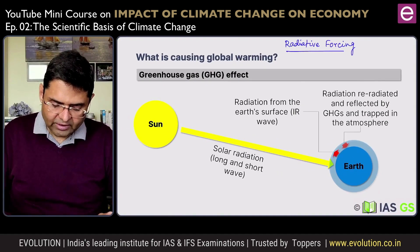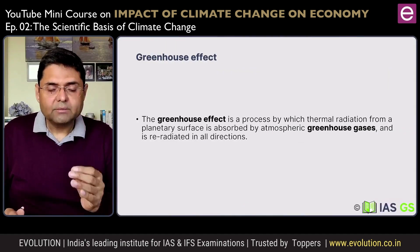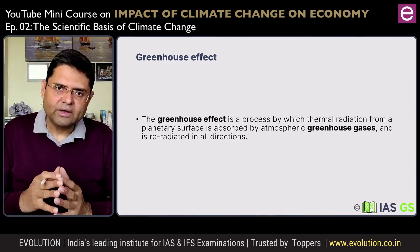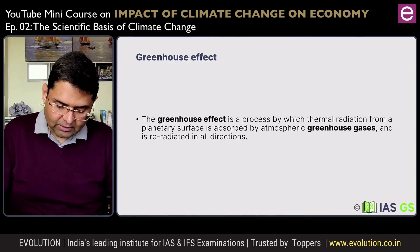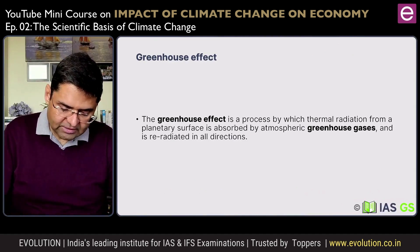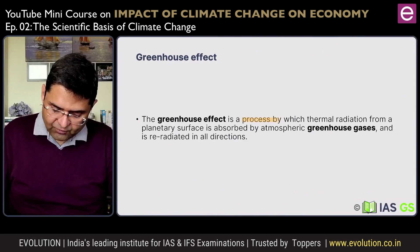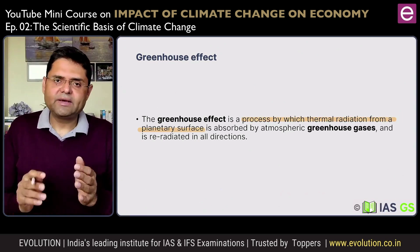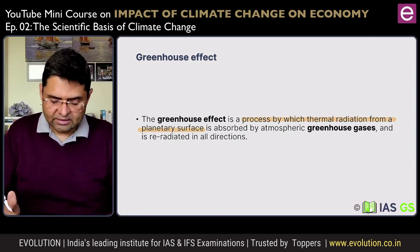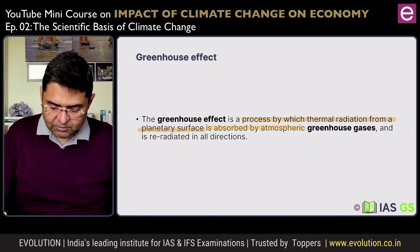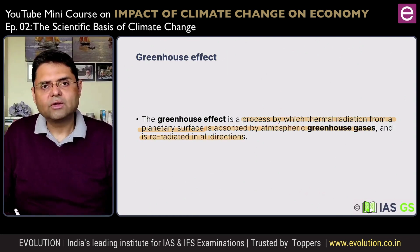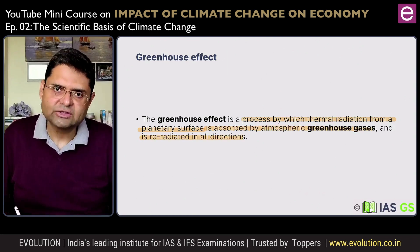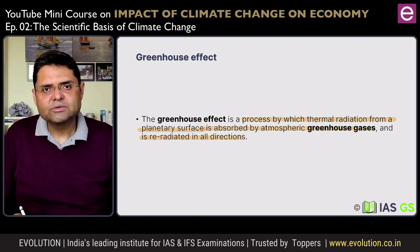The proper definition of the greenhouse effect is: a process by which the thermal radiation from a planetary surface — in this case, our Earth — is absorbed by atmospheric greenhouse gases and is re-radiated in all directions. That is the greenhouse effect. Greenhouse effect gets its name from the greenhouse that we use to grow plants under controlled conditions, and the most controlled condition we are looking for is temperature.